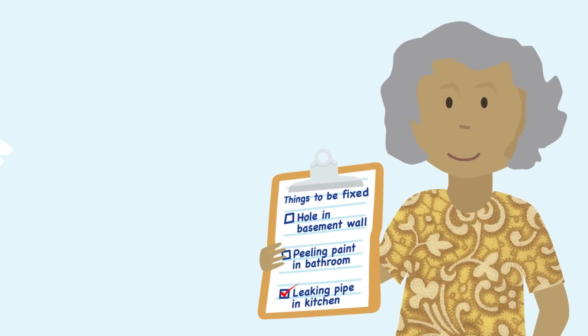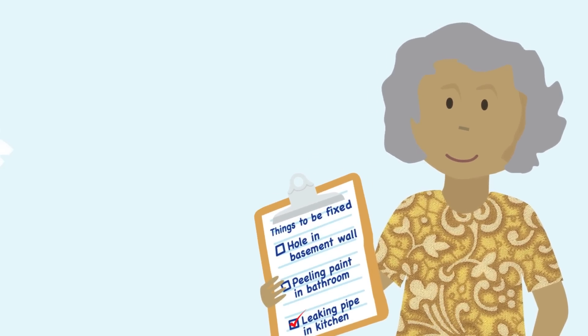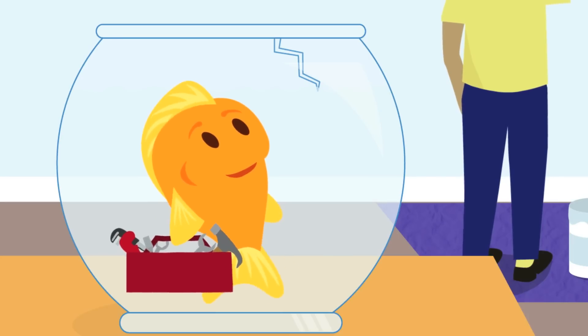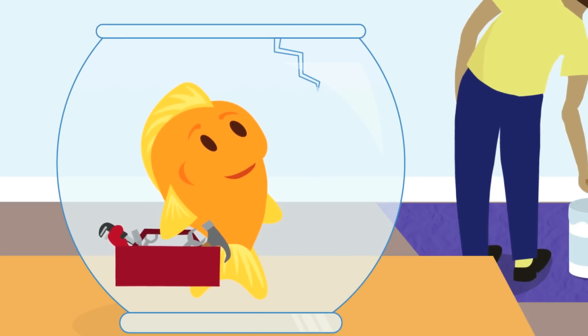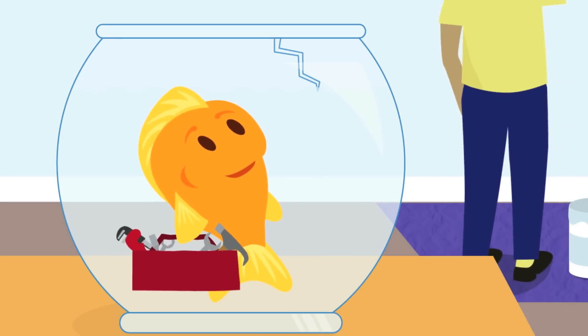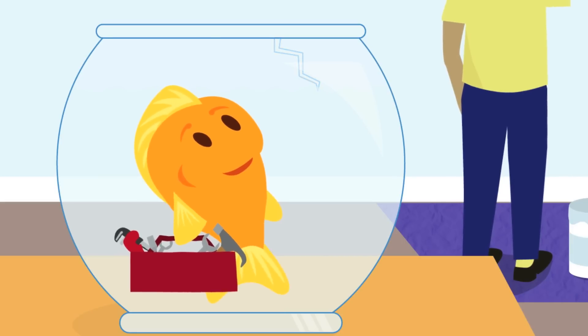But you can help your family by talking about it. If you see a small problem, like a little hole in the wall, tell a grown-up you know so the whole wall doesn't fall.